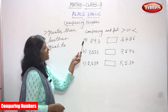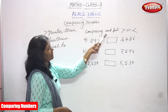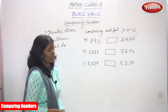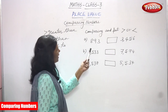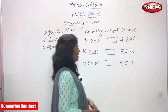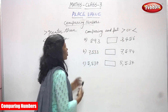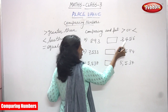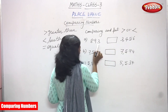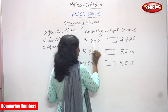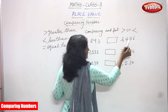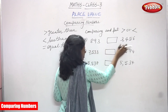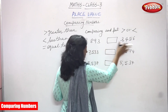Now we are going to see comparing and put greater or lesser sign. So 893 and 3456. This is ones, tens, hundreds — this is a three digit number. And ones, tens, hundreds, thousands — this is a four digit number.